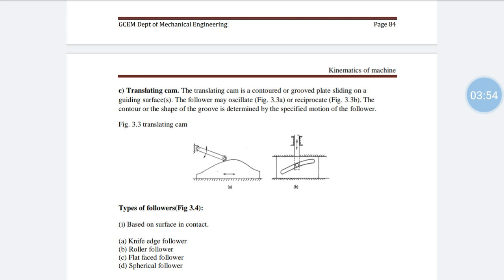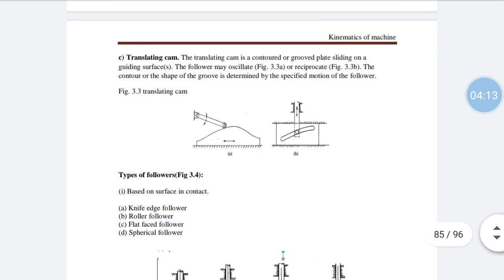Two types of translating cam are shown: in type A, the cam rises gradually and then reduces; in type B, the contour shape is cut on a thin plate and the cam moves based on the profile. This concludes the classification of cams based on physical shape.